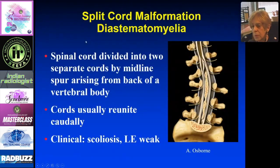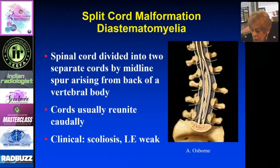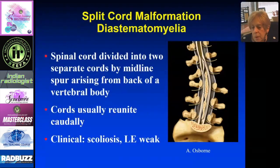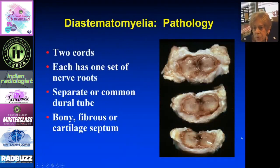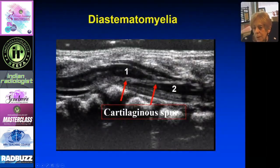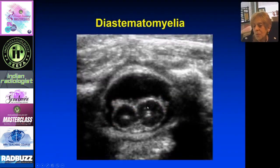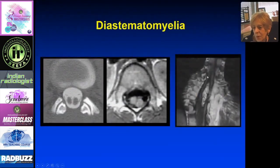The final pathology is diastematomyelia, or split cord malformation. The spinal cord is divided into two by a midline spur arising from the vertebral body. The spur may be cartilaginous or bony. The two cords usually reunite at a lower level. Clinically, patients can have scoliosis and lower extremity weakness. On ultrasound, you see two cords, each with its own nerve roots and separate dural tubes. The spur appears echogenic. The corresponding MRI confirms the split cord and surrounding anatomy.